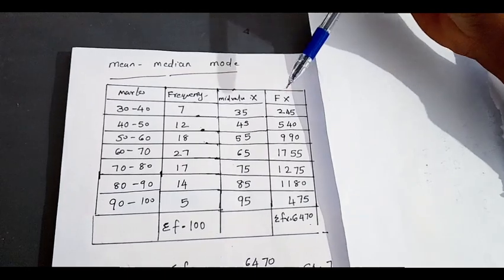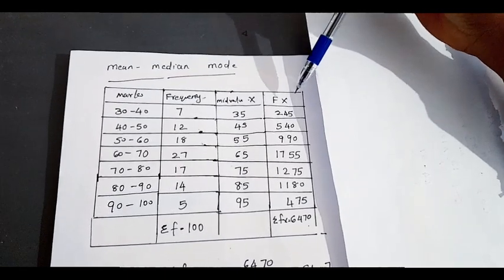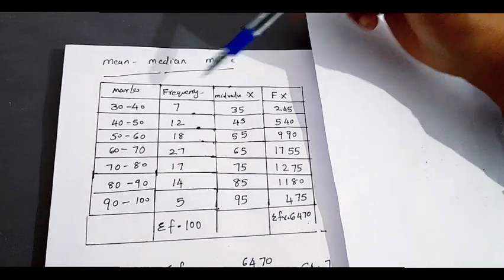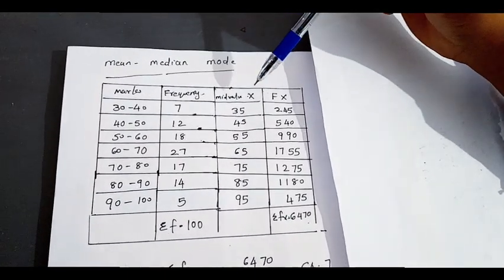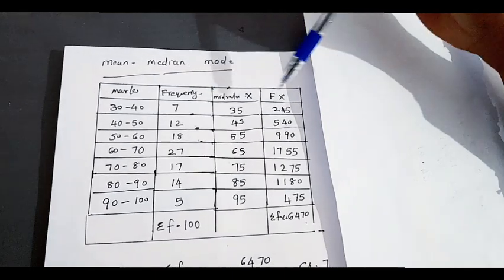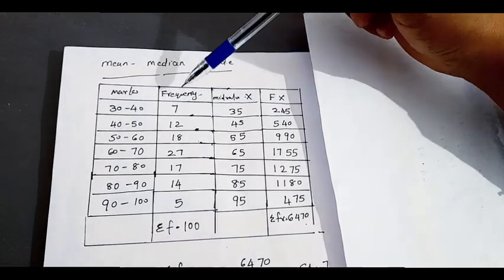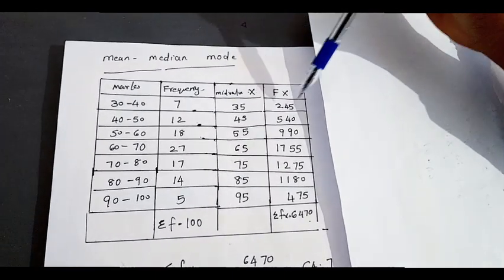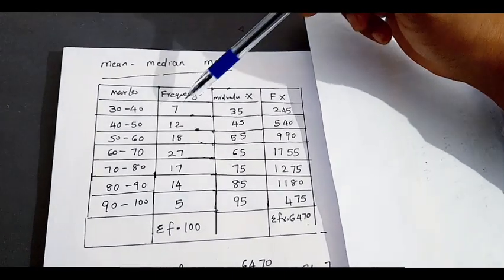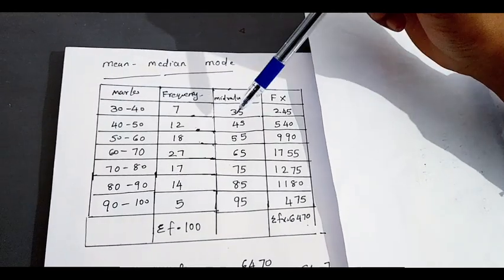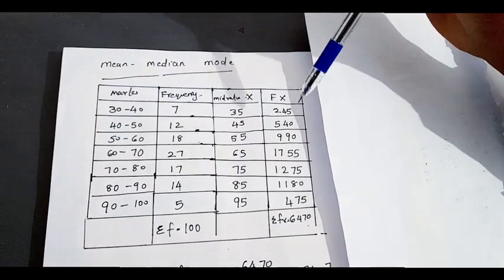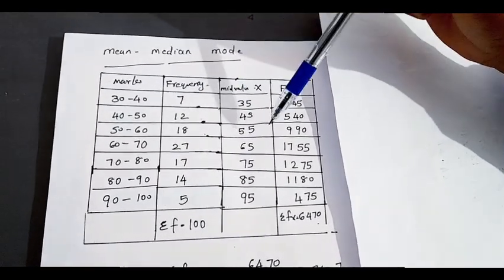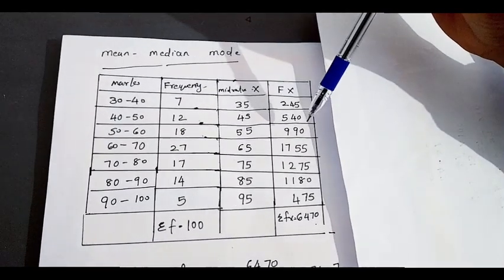Here we add the x values. Now we have fx — this is the frequency multiplied by x. We add the x values, and 50 is 50.